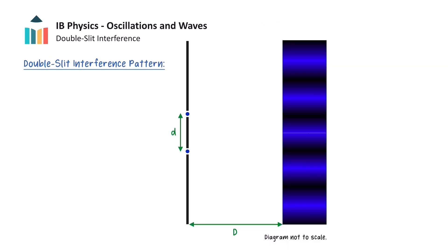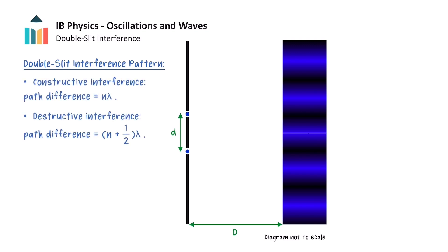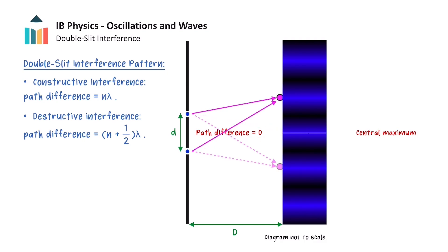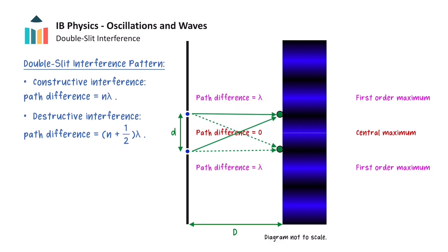To understand how the interference pattern is formed, we will look at the path differences between points on the screen and the slits. Note that this diagram is not to scale. The point at the midpoint between the two slits has waves travelling equal distances to the screen, so their path difference is zero and the waves will interfere constructively. This produces a particularly bright fringe known as the central maximum. Either side of the central maximum, we find bright fringes corresponding to a path difference of one wavelength, known as the first order maxima. Dark fringes are located in between the bright fringes as a result of destructive interference, since their path difference is equal to half a wavelength, and these are known as the first order minima.